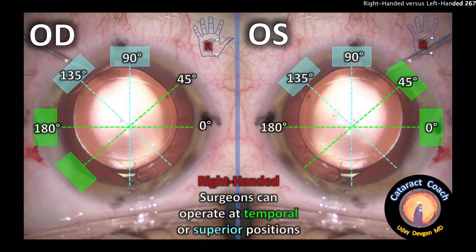The green area is where the right hand naturally falls. It's very easy to make an incision if you're sitting temporally, at the 180 or even 45 degree area, or anywhere in between, and that applies to both right eye and left eye. If the surgeon is sitting superiorly, the right hand falls somewhere between 90 and 135 degrees, making it very easy to make an incision there. We like to make our incisions fall on the steep axis of the astigmatism in the cornea, and right eye and left eye both have about the same results.